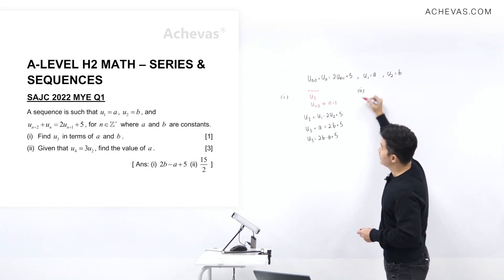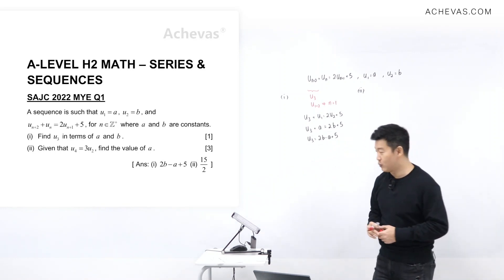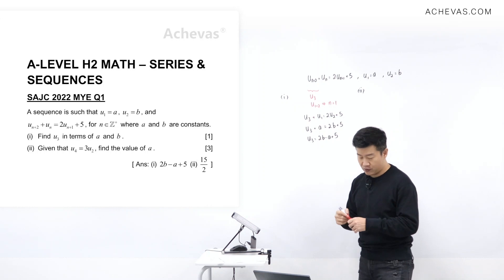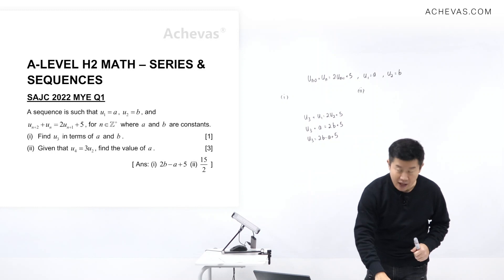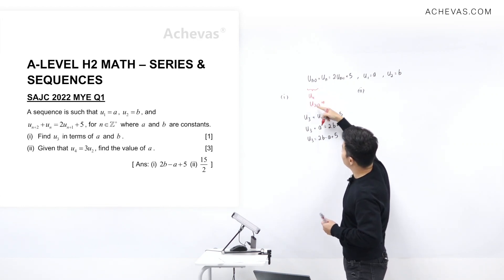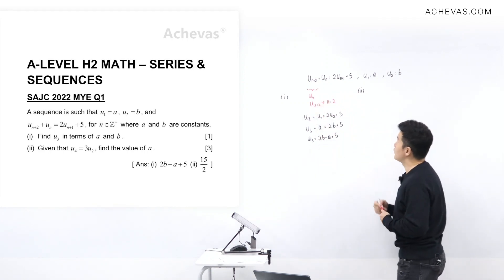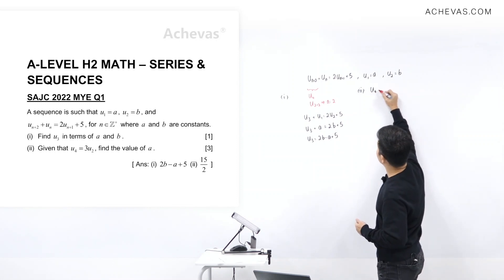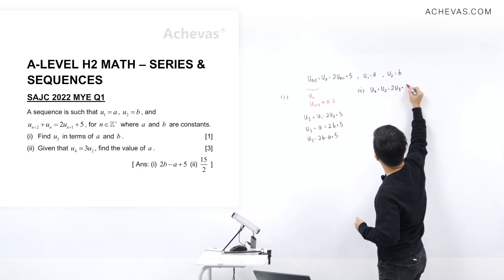In part 2, we are given that u4 is equal to 3u2, and we need to find what a is. Let's first find u4. For u4, I'm going to do the same matching: u4 is like u(2+2), which tells us that n is equal to 2. Using the equation with n equal to 2: u4 plus u2 is equal to 2u3 plus 5.